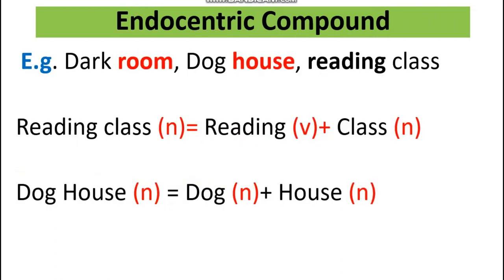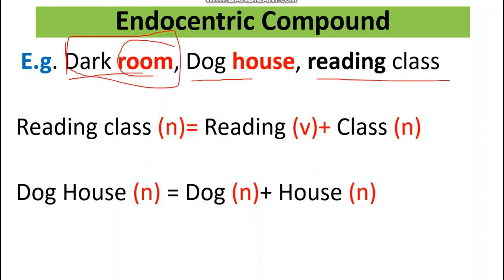Now let's look at some examples: 'darkroom', 'dog house', 'reading class'. In 'darkroom', the word 'room' is the head word, because the overall compound is about a room — a dark room. In 'dog house', the word 'house' is the head word, which carries the basic meaning of the whole compound.